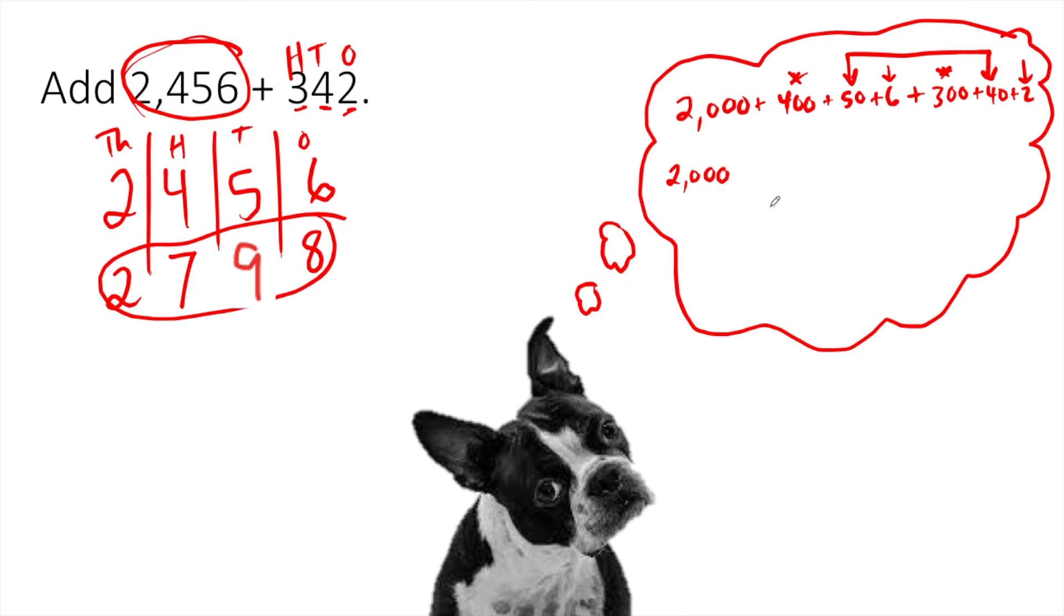The 2,000 didn't change because I wasn't adding 2,000s. Now I'm going to add 400 and 300. Next, I'm going to add 50 and 40. Then I'm going to add my 6 and my 2. This is just another way of showing how we changed our digits in the place value chart. And then we still have the same pieces. They just got put together in a different order.